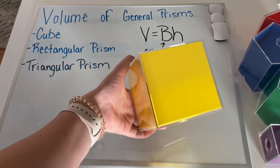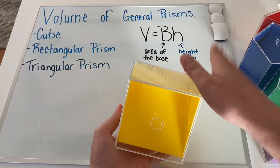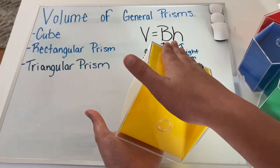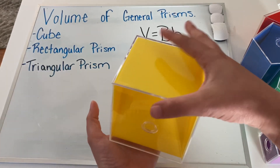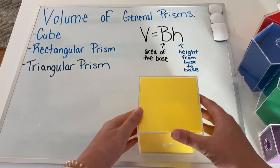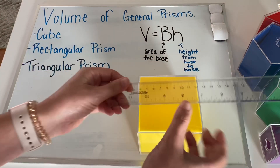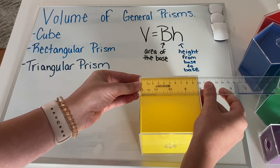So, we're looking at the cube. Remember, we said that we have a base and a base — they are parallel to each other, and that's what makes it a prism. So we need to find the area of this base. The base is a square, and we're very familiar with how to find the area of a square — we multiply the two sides by each other.